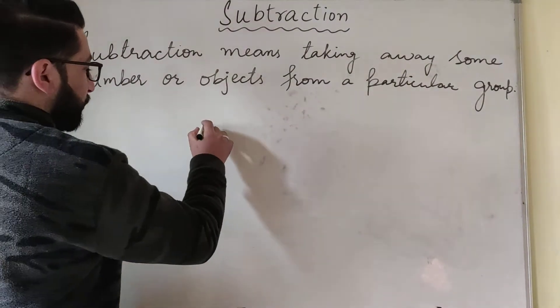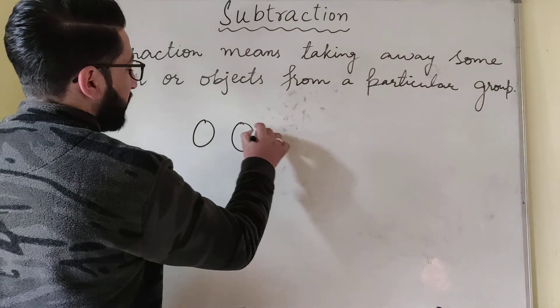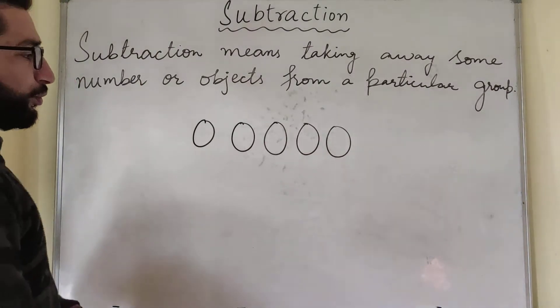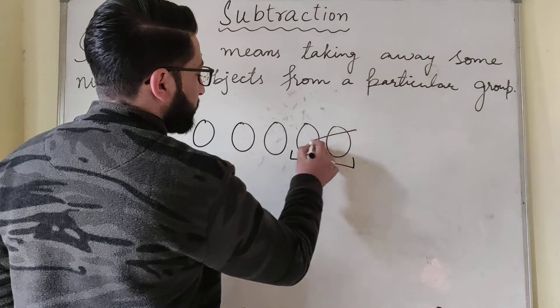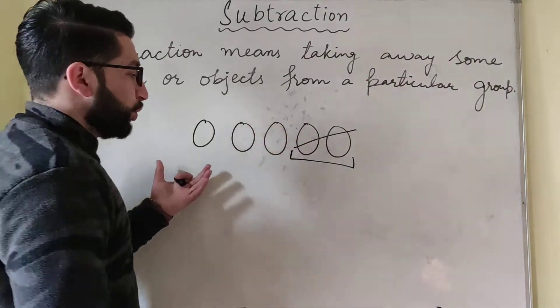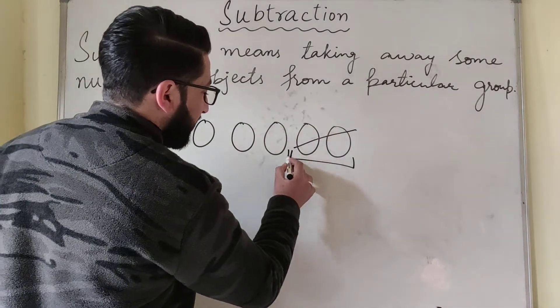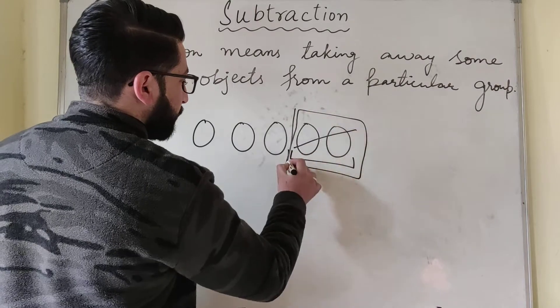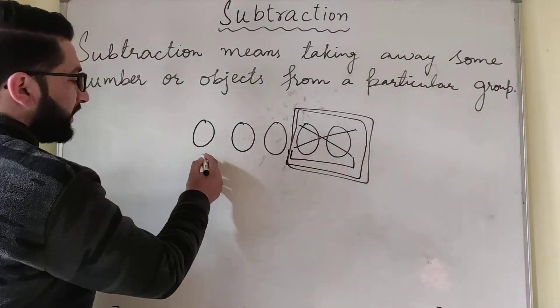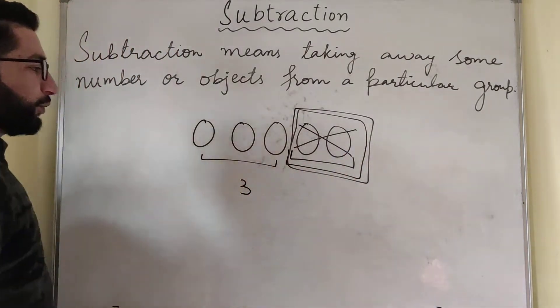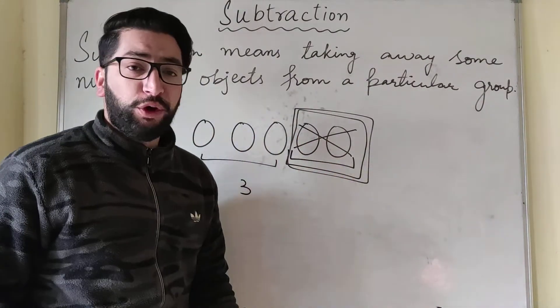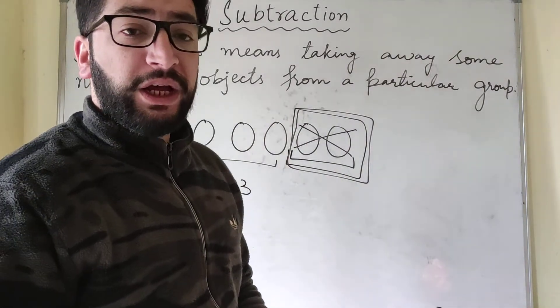Suppose Aakib is a boy and he has got five balls. His friend came and asked for two balls, so Aakib gave two balls away to his friend. So how many balls are left with Aakib? He will take away these two balls from the set of five balls. So when he takes these two balls away, there are three balls left with him. So he has taken away those number of balls which his friend has asked for.